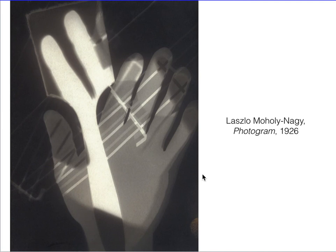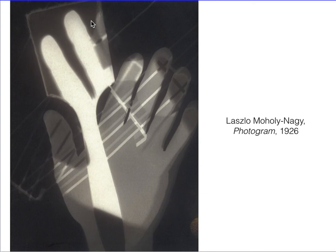Let me correct myself here — what we're actually seeing is the artist's hand next to what I called a spatula because it looks like one, but you can see the little dusty edges here. This is a paintbrush. This is Moholy-Nagy putting his hand and a paintbrush onto photographic paper and exposing the composition to light.